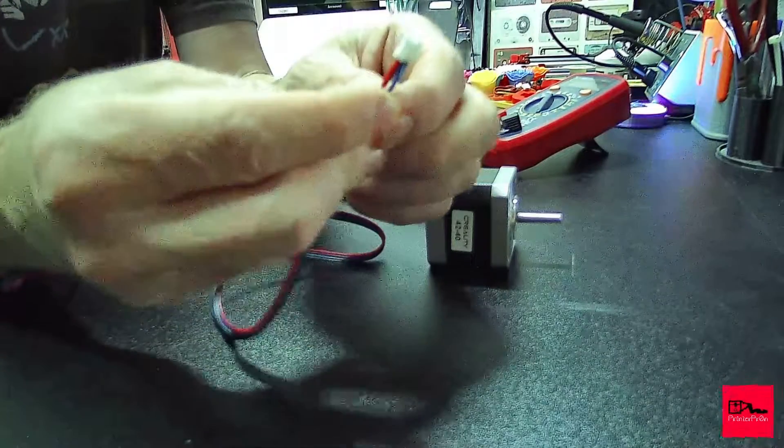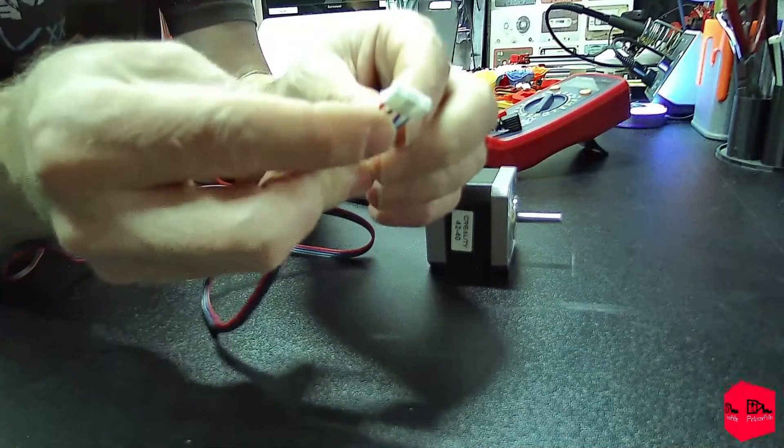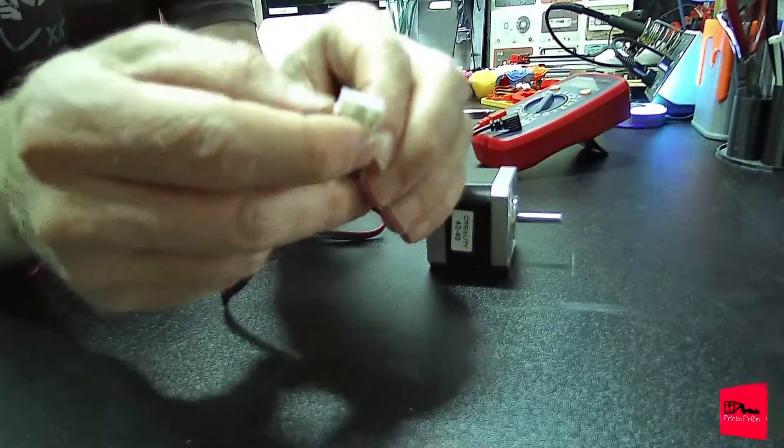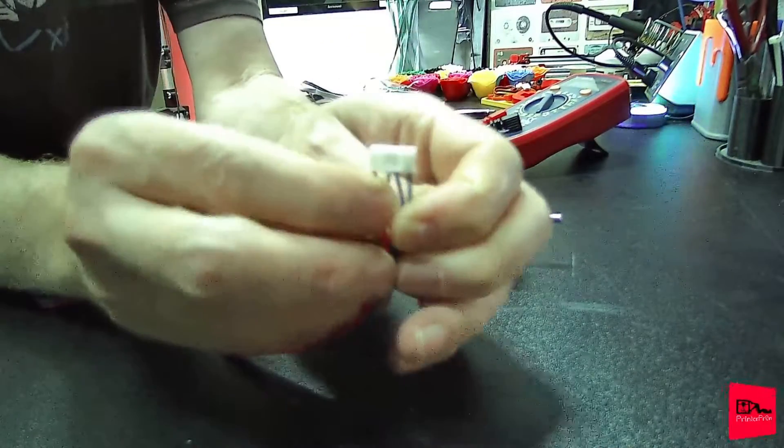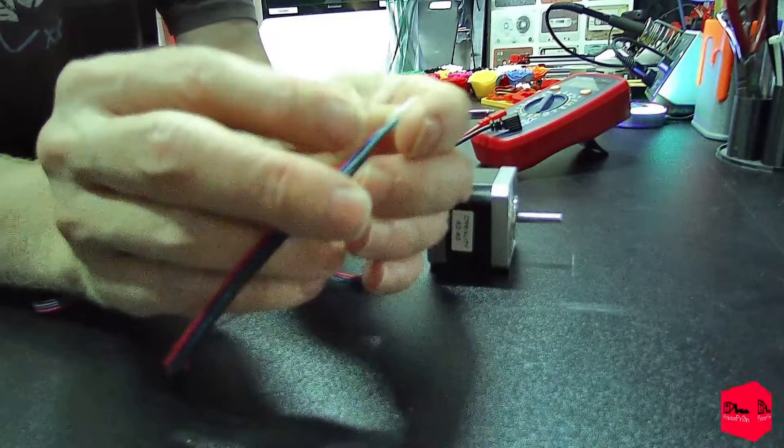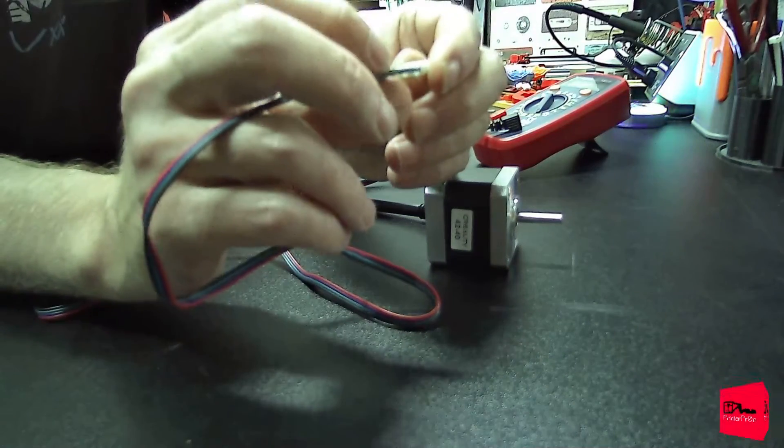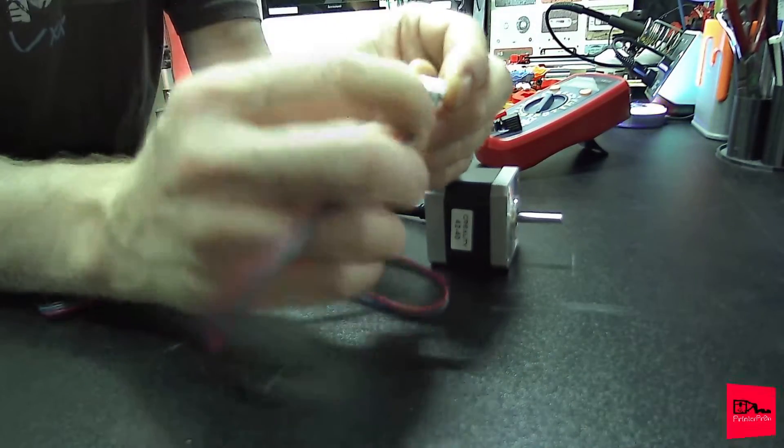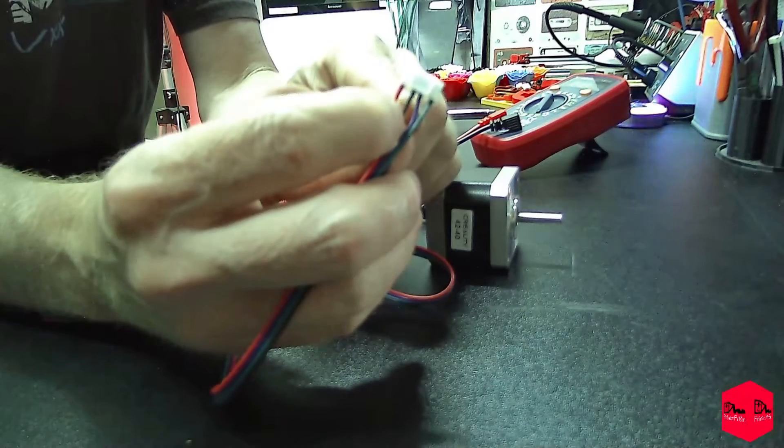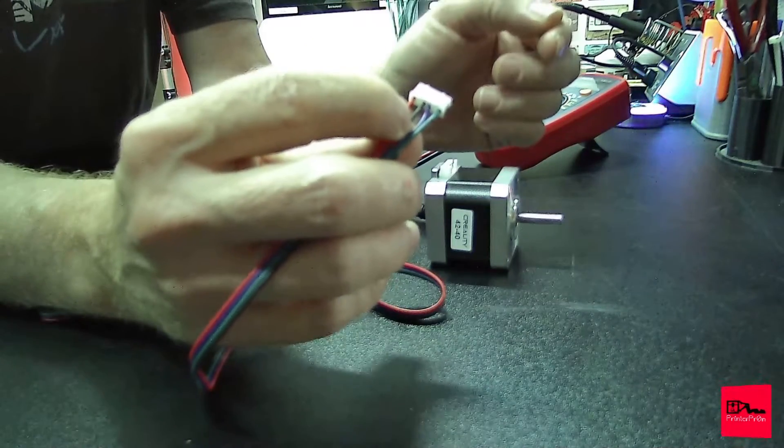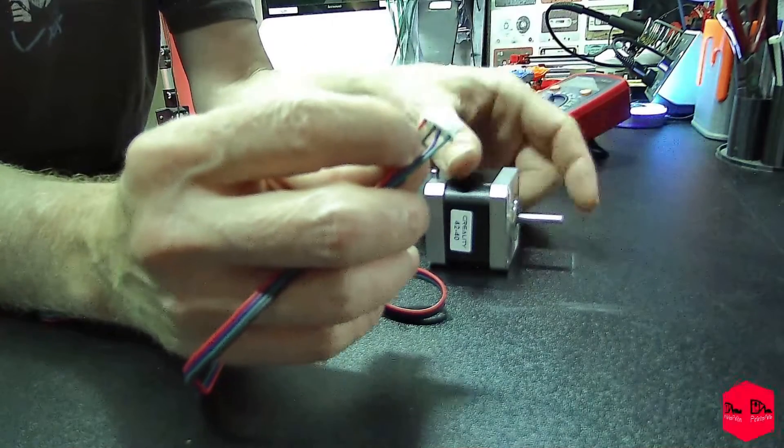So usually on these motors, these two wires and colors are kind of imaginary because who knows what you're gonna get. But on this one, the red and the black appear to be a pair. Oh no, I am wrong. And then the blue and green are a pair. So let's just say that's how it is. Sometimes these two wires will be swapped, the two center wires.